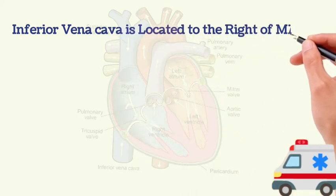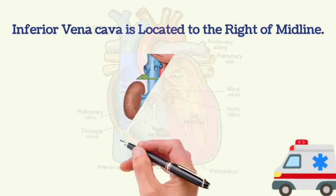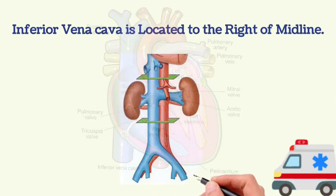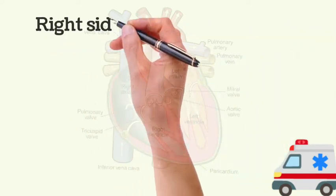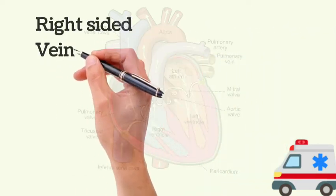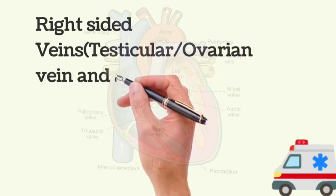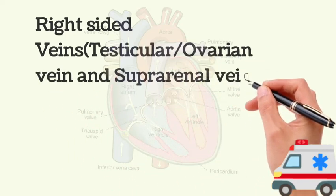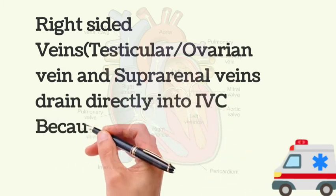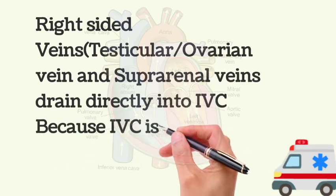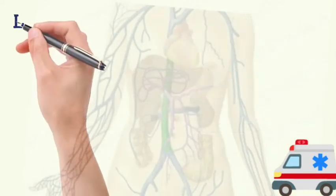The inferior vena cava is located to the right of the midline. Because of this, right-sided veins — the right testicular vein in males, the right ovarian vein in females, and the right suprarenal vein — drain directly into the inferior vena cava.